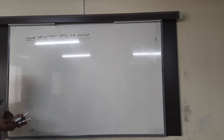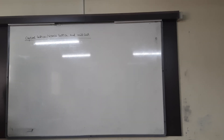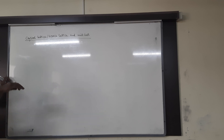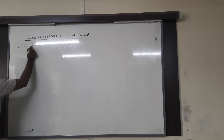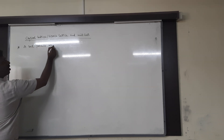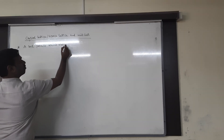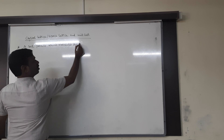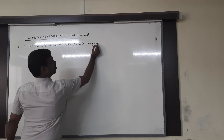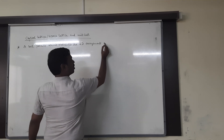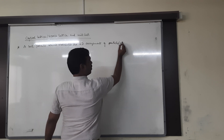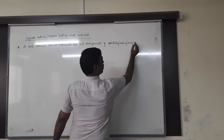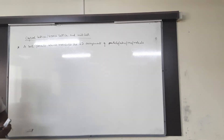Crystal lattice and space lattice. What is crystal lattice, what is space lattice, and what is unit cell? The simple definition of crystal lattice is a set of points which indicates the three-dimensional arrangement of particles — which may be atoms, ions, or molecules — and is called crystal lattice or space lattice.